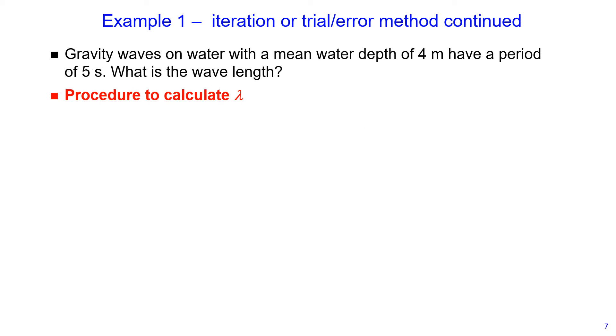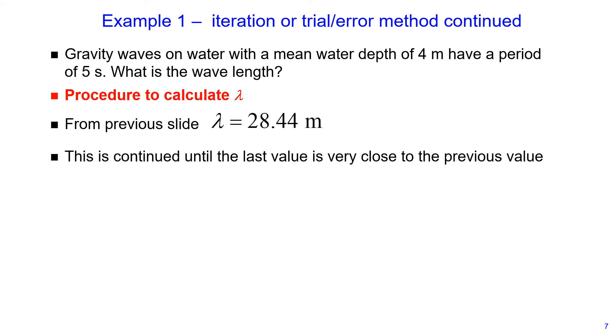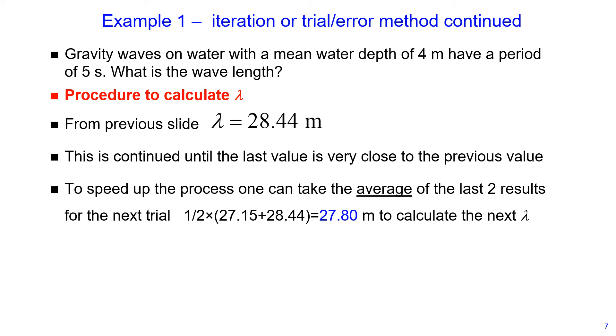From the previous slide, I obtained the wavelength to be 28.44 meters. And I repeat the same process until the last value is very close to the previous value. To speed up the process, what I can do is take the last two results and take average of the last two results for my next trial value. My last two results were 27.15 and 28.44, and the average of these two numbers is 27.80. So I take this as my next trial for the next value of lambda.